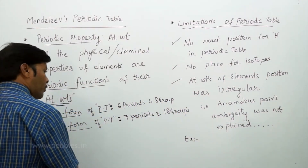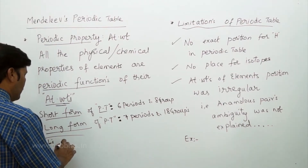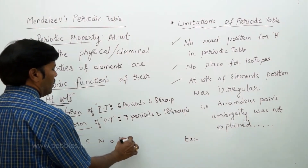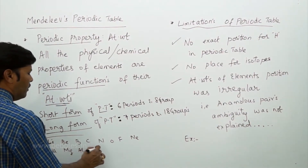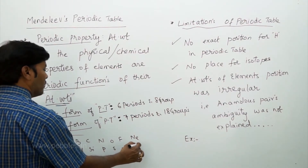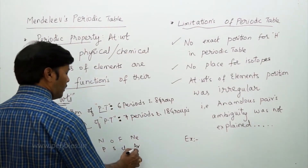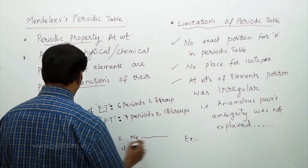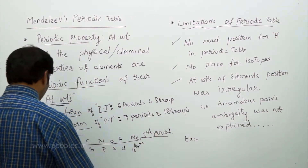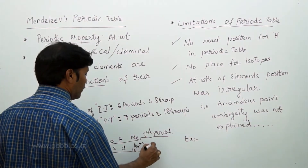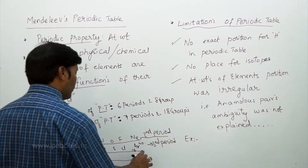Take lithium, beryllium, boron, carbon, nitrogen, oxygen, and neon — these elements belong to the second period. Then sodium, magnesium, aluminium, silicon, phosphorus, sulfur, chlorine — these belong to the third period. And potassium, with atomic number 19 and atomic weight 39, belongs to the fourth period.